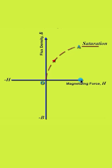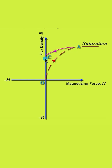Next, we will see what happens when this magnetizing force is reduced in the negative direction. We might think that the flux density comes back along the same curve from A to O, but it is not like that. It takes a different path — the path AC. This means that even after reducing the magnetizing force H to zero, some magnetism remains in the core. The amount of flux density remaining in the core after removing the magnetizing force is called residual magnetism or remnance of the material, represented by point C.